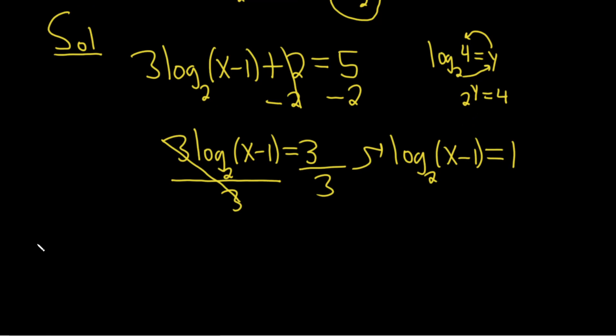So there is a formula that says if you have b to the log base b of x, that that is equal to x. These basically go away. So here we have a 2 as the base. So what we'll do is we'll put a 2 here and a 2 here. So these go away.